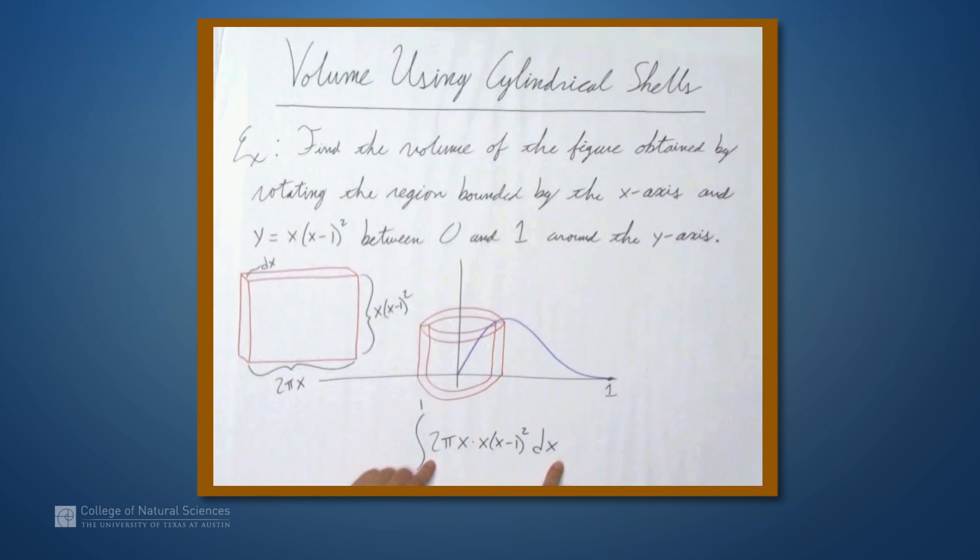2π times x times (x minus 1) squared dx, right? The formula inside is the formula for the volume of this rectangular solid. So, last thing to do is evaluate this integral, which we'll do on the next page.